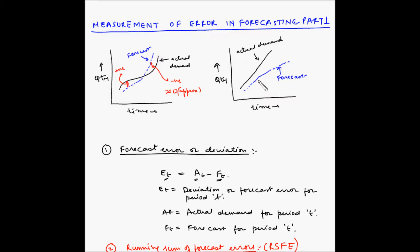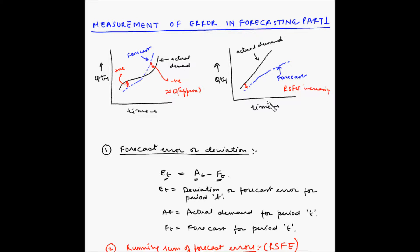Now let us look at the second graph. In this case, we can see that the forecast is always lower than the actual demand. So if you take the difference between the actual demand and the forecast and keep adding it, the cumulative RSFE will keep on increasing because there is a difference between the actual demand and the forecast for each period. This increasingly large cumulative forecast error indicates some kind of systematic deficiency in the forecasting approach — maybe the demand planner has not considered a trend element, cyclical influence, or seasonal influence.